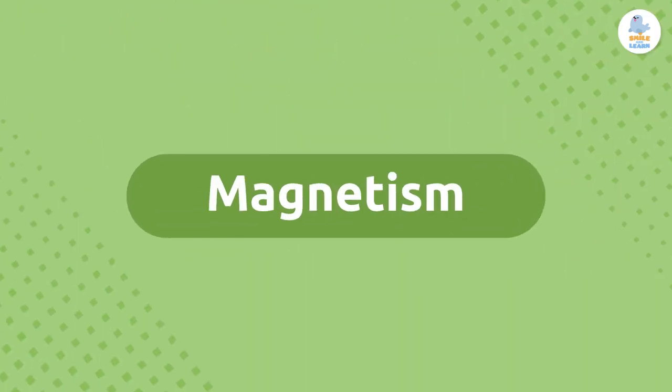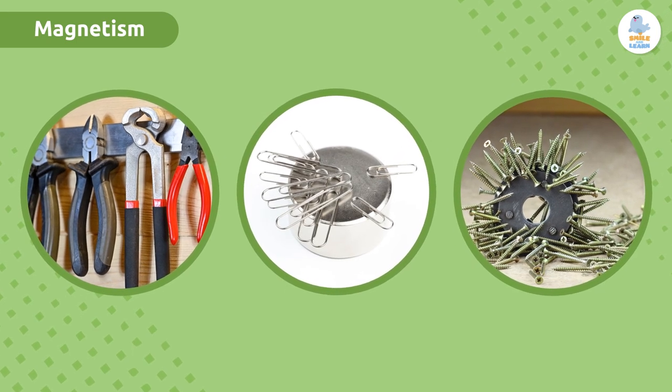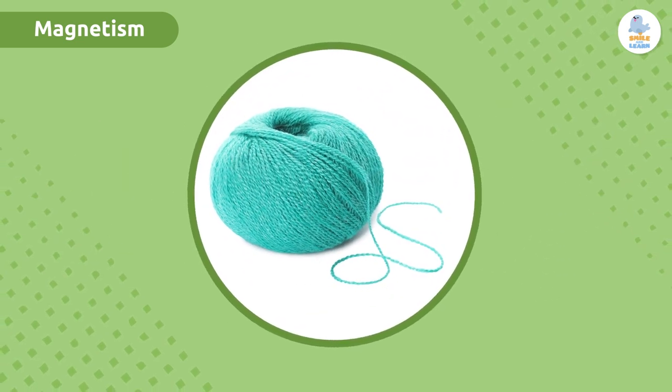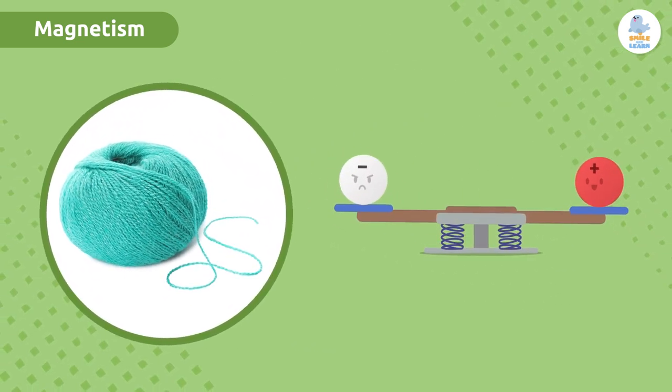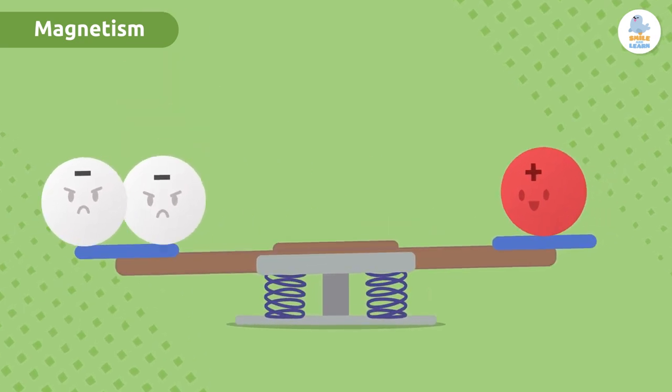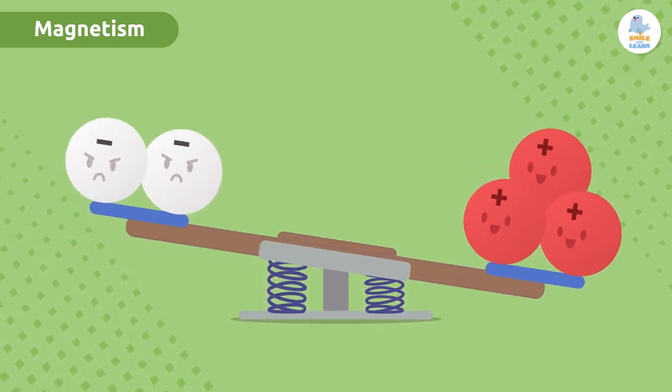Magnetism is the property some objects have that attracts other metallic elements like iron. As you know, all matter has an electric charge. Normally this charge is electrically neutral, which means there is an equal number of negative and positive charges. However, in some materials this is not true, and this imbalance of charges causes attraction or repulsion.